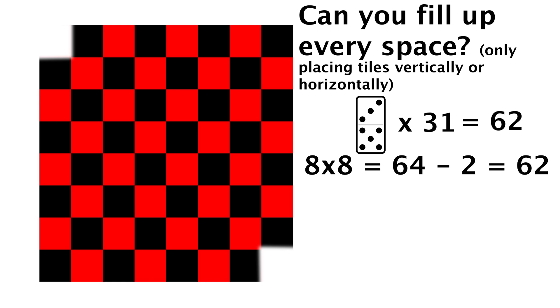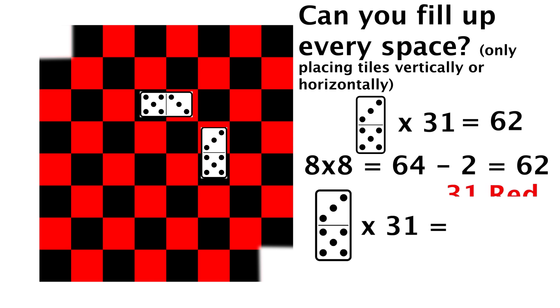See if you can get it, but the answer is fairly simple. Whether you orient the domino vertically or horizontally, it will cover one black space and one red space.